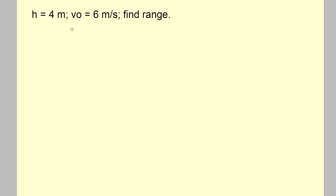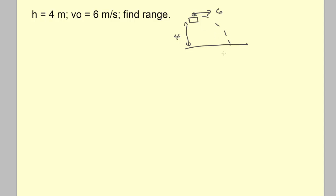This is a continuation of the same problem: platform 4 meters above, kicked straight out at 6 m/s. This part is asking about the range. The time of flight — the time it's in the air — is essentially 0.9 seconds.